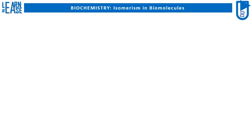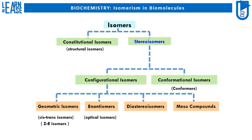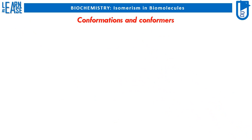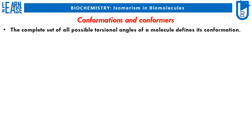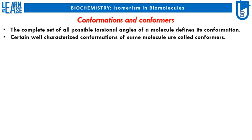The basic hierarchy of isomer classification is shown as explained previously in the video. Now I will focus on explaining conformational isomers. The complete set of all possible torsional angles of a molecule defines its conformation. Certain well-characterized conformations of the same molecule are called conformers.